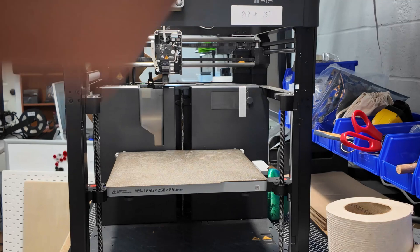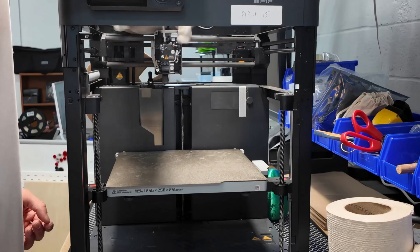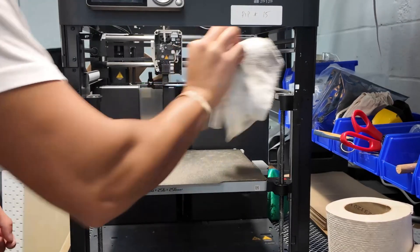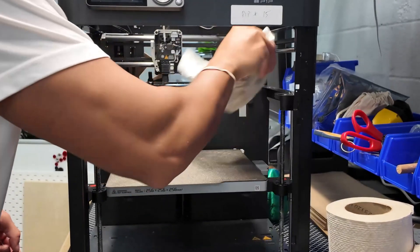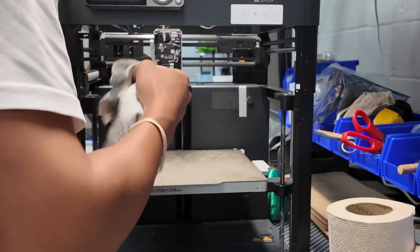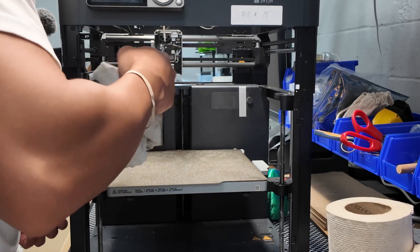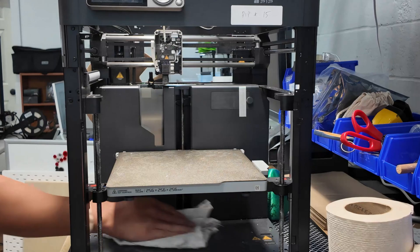Next step is I'll just take a microfiber cloth, just like this, and just give the printer a nice clean rundown. There's a lot of dust that accumulates on these printers over time. So this is a good way to just clean up the dust, clean the mirror here, so you get a nice clean picture on your Bamboo Handy app.